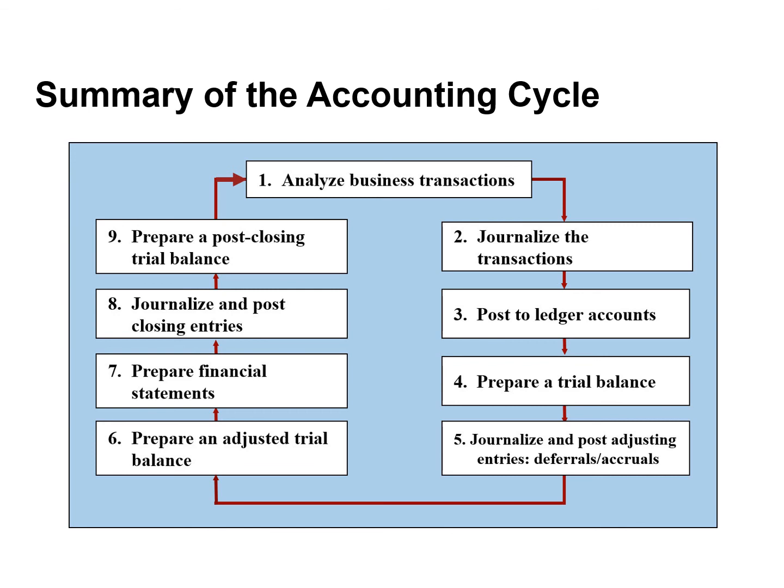Steps 8 and 9 — closing entries and a post-closing trial balance — usually occur at the end of a company's annual accounting period. After a company journalizes and posts all closing entries, it prepares another trial balance called a post-closing trial balance. A post-closing trial balance is a list of all permanent accounts and their balances after closing entries are journalized and posted. Since all temporary accounts will have zero balances, the post-closing trial balance will contain only permanent balance sheet accounts.